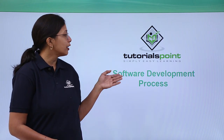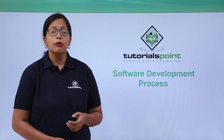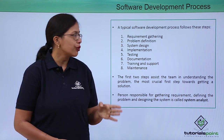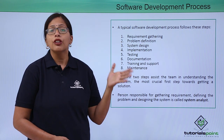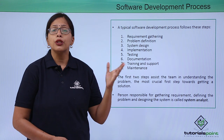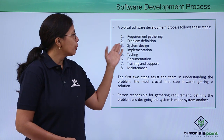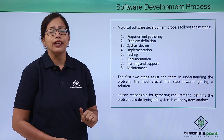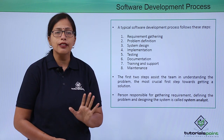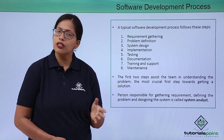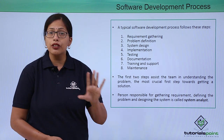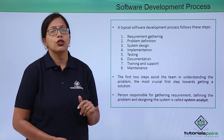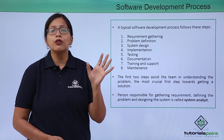In this video we are going to look at the complete software development process. These are the typical steps that a software development process follows: requirement gathering — you need to gather the requirements of the user or your client; problem definition — once you have the requirements you will define the problem; system design — after defining the problem you design the system; and implementation, which is the coding phase. After writing the code, you need to test that there are no errors in it.